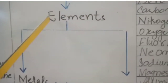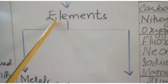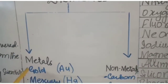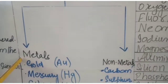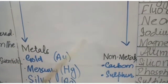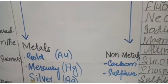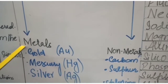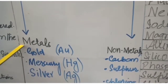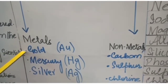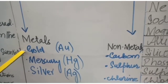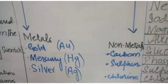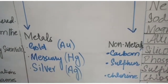Now we have the classification of elements. These elements are also classified as metals and non-metals. Metals: generally they are solid, except mercury. They are lustrous and shiny. They are good conductors of electricity.